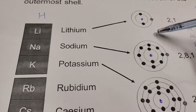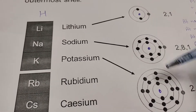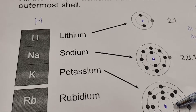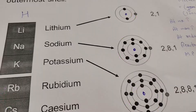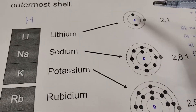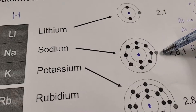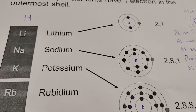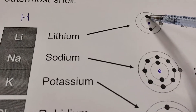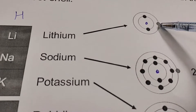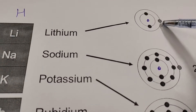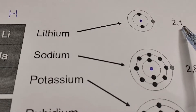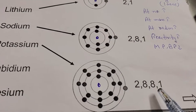When moving downwards in group one — lithium, then sodium, then potassium — elements are arranged in increasing order of atomic number and atomic mass. Lithium has atomic number 3, sodium has atomic number 11, and potassium has atomic number 19. For lithium, we have three electrons; the valence electron is in the outermost shell, so the configuration is 2, 1 — and for sodium it is 2, 8, 1.